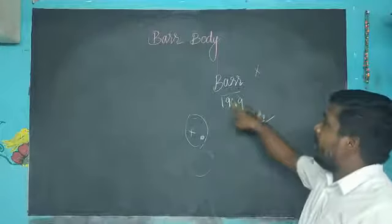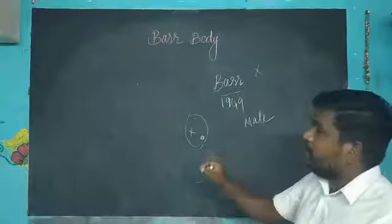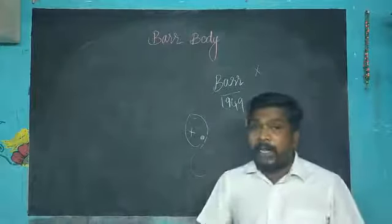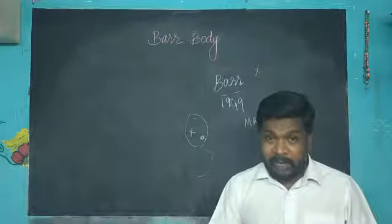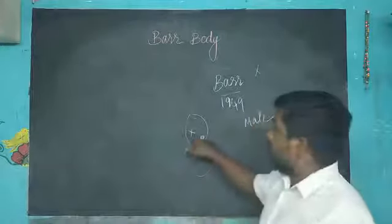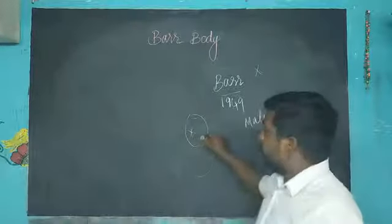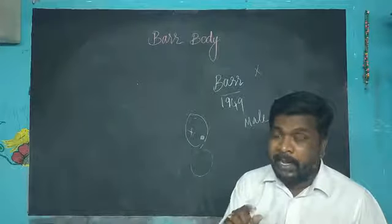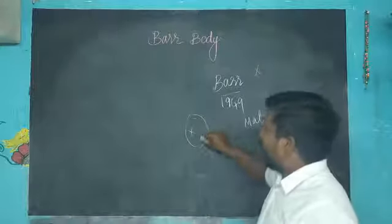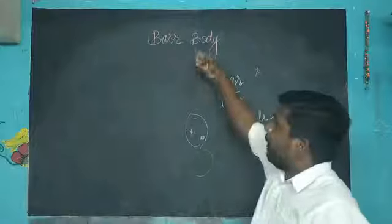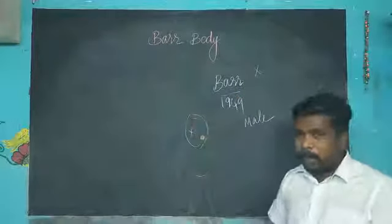Barr and Bertram in the year 1949 observed a specialized body in the female cat nerve cells. Out of two X chromosomes, one chromosome is visible, another chromosome is condensed and formed as a small spherical body. Since this special body was discovered by Barr, it is named as the Barr body.